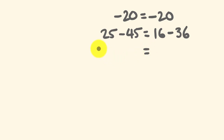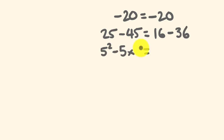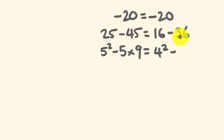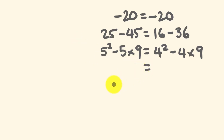I'm going to rewrite these a little bit: 25 is equal to 5 squared, and negative 45 is equal to negative 5 times 9. Then 16 can be written as 4 squared, and negative 36 can be written as negative 4 multiplied by 9. Nothing wrong so far.